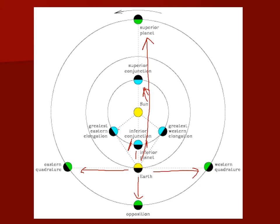A superior planet never looks like a crescent — it always appears gibbous at minimum and transitions between gibbous and full. An inferior planet, by contrast, looks full when it's on the far side of the sun where you can't see it, and shows a dark or crescent phase when it's between us and the sun — closest and largest in the sky. Those are the phase orientations of planets as they orbit the sun.